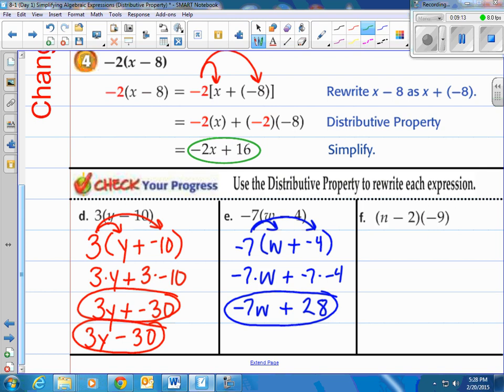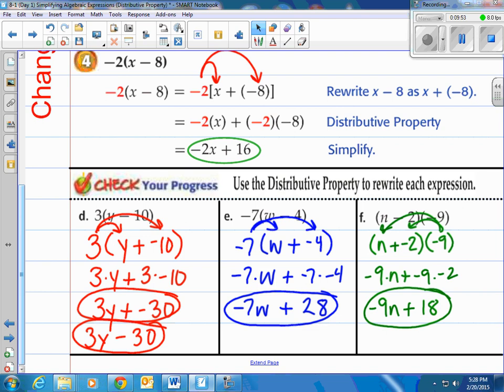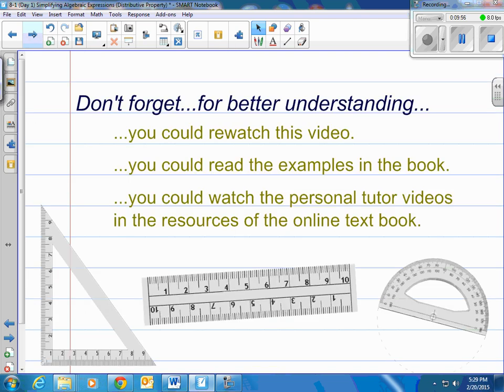Alright, and our last one. Now they put the number on the right side, but we're still distributing. It's subtraction, n minus 2. So we're going to change that to an addition problem. Then we're going to distribute that negative 9 to both those inside the parentheses. So negative 9 times n plus negative 9 times negative 2. So negative 9 times n is negative 9n. You'll notice I put the negative 9 first because I knew that I was going to have to put that number first anyways. And then negative 9 times negative 2 is a positive 18. There's our final answer.